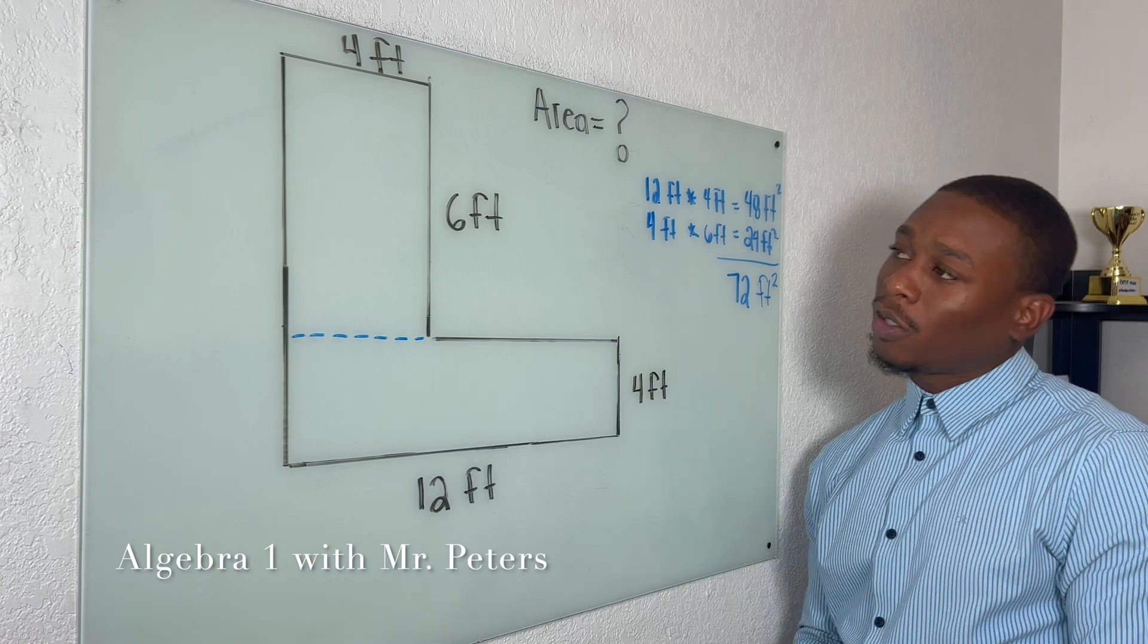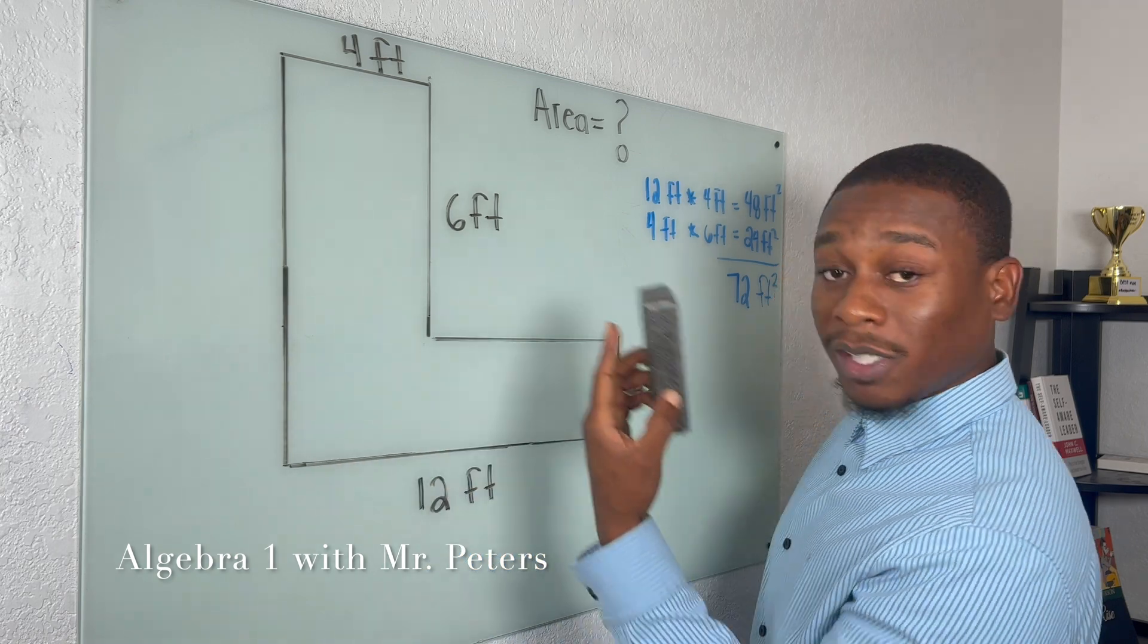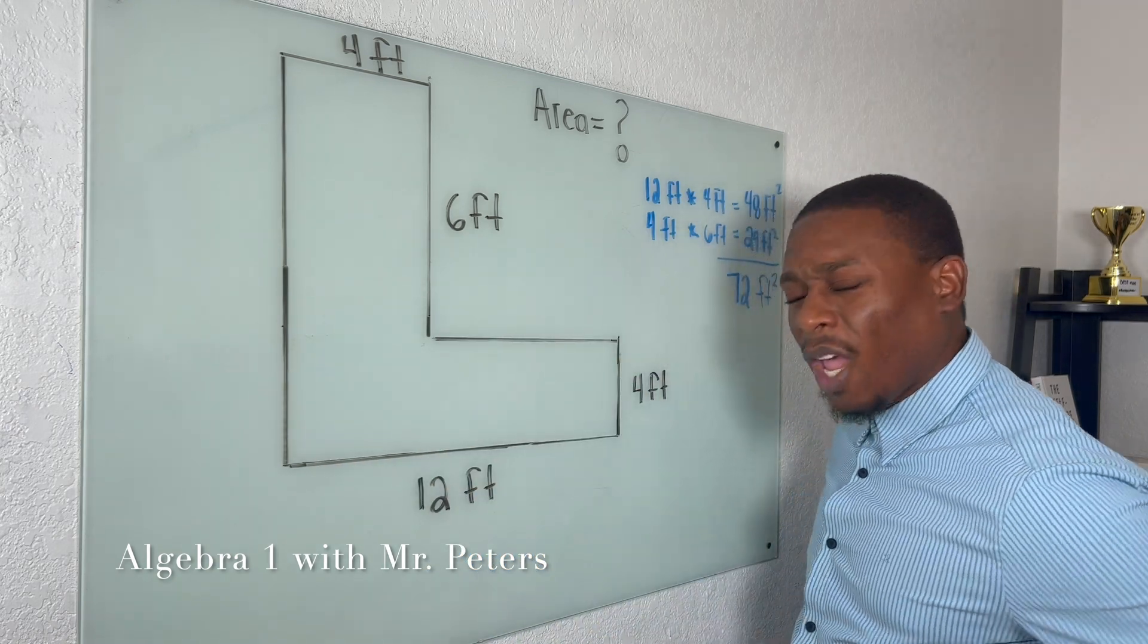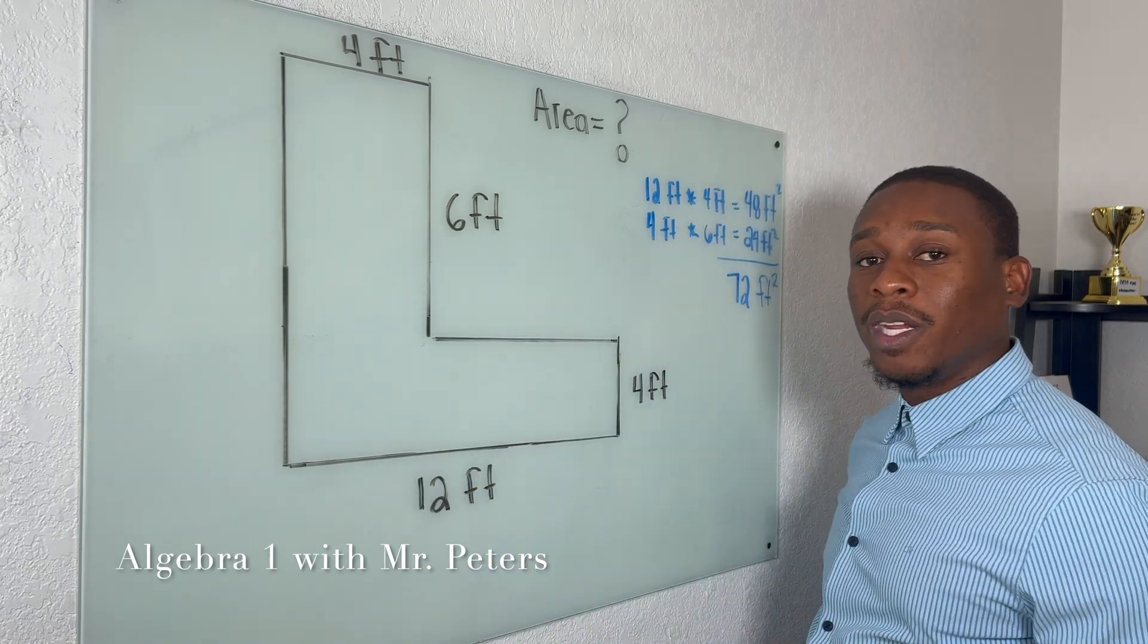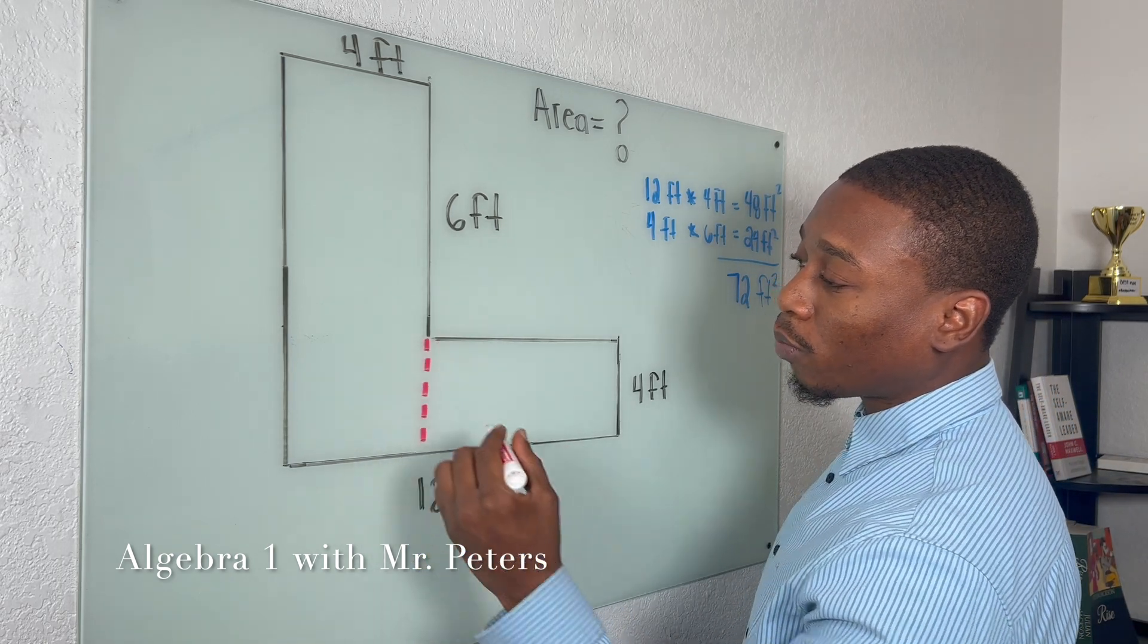But let's just start this problem back over and let's imagine that we did not see the problem like this and we cut or divided the shape in a different way. So let's say we did it like this. How would this change the problem?